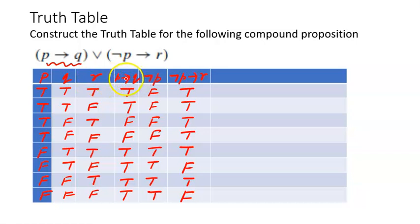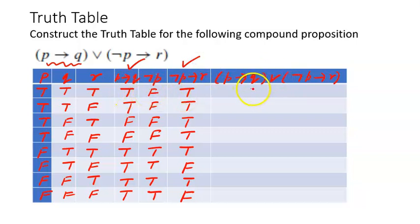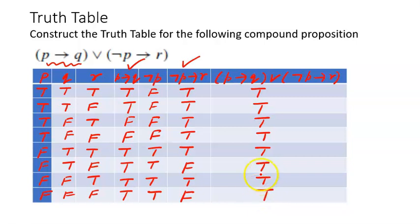Finally, we have to get the truth table for P implies Q, or negation of P implies R. We look at the P implies Q column and the negation of P implies R column and combine with the or operator. For all eight rows, applying OR gives: true, true, true, true, true, true, true, true. All values in this column are true, so take a pause, see if you understood, and try rewriting it yourself. In case of doubt, look at the video again.